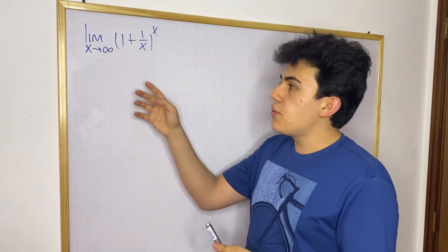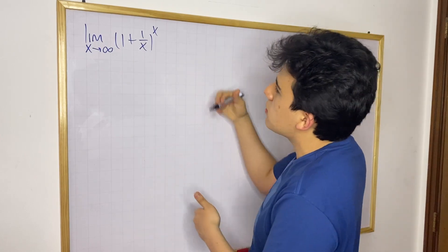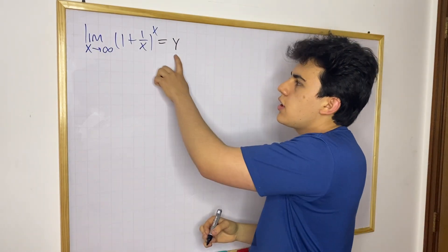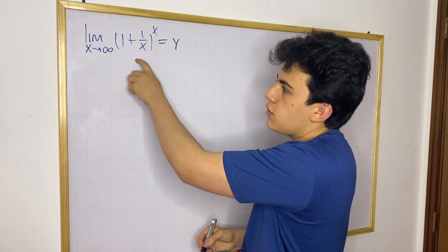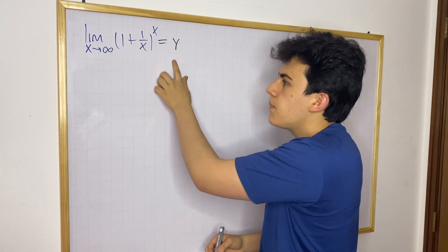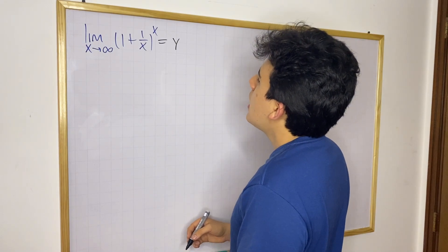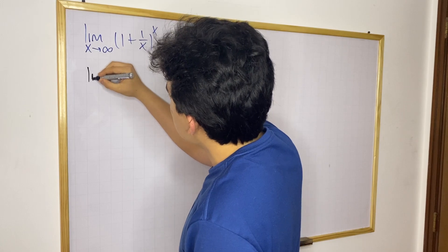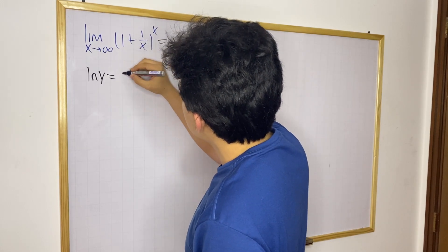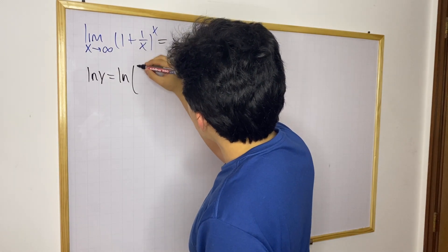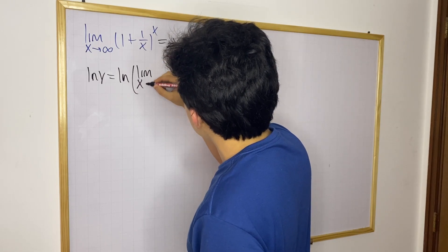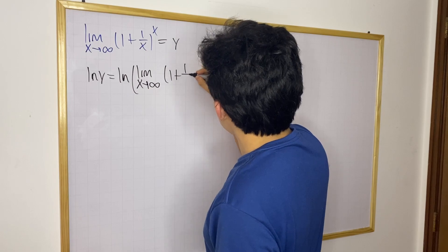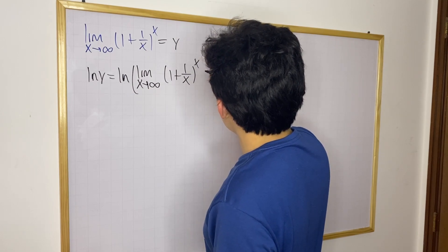The first thing you want to do is let this limit be equal to some variable. I'm going to call it y, so that I can refer to this limit without writing the entire thing. Now I want to take the natural log on both sides of this equation. That gives us ln(y) equal to the natural log of the limit as x approaches infinity of (1 + 1/x) to the x power.